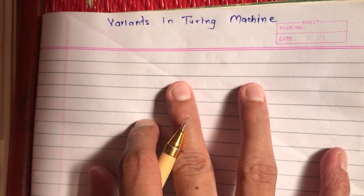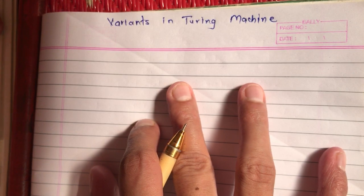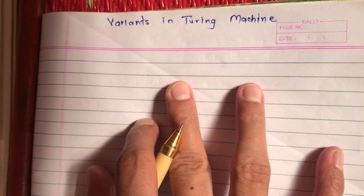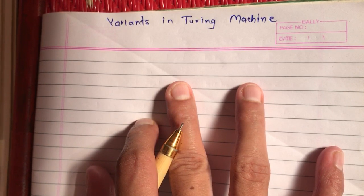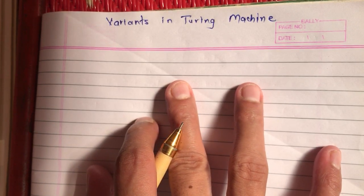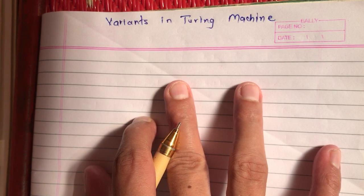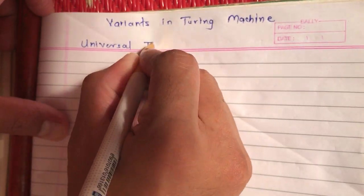In this video we are going to start with our new unit: Variants in Turing Machine. In the earlier chapter we have seen what a Turing machine is, its five-tuple definition, and how it can be used to solve problems of various types of languages like regular language or context-free language. We also discussed how Turing machines can solve different functions like modular functions, copying, and deleting of strings. Turing machines are generic machines with a broader range of problem-solving. In this unit we are going to discuss different variants in Turing machine — different types of special Turing machines. The first such variant we are going to study in this video is the Universal Turing Machine.